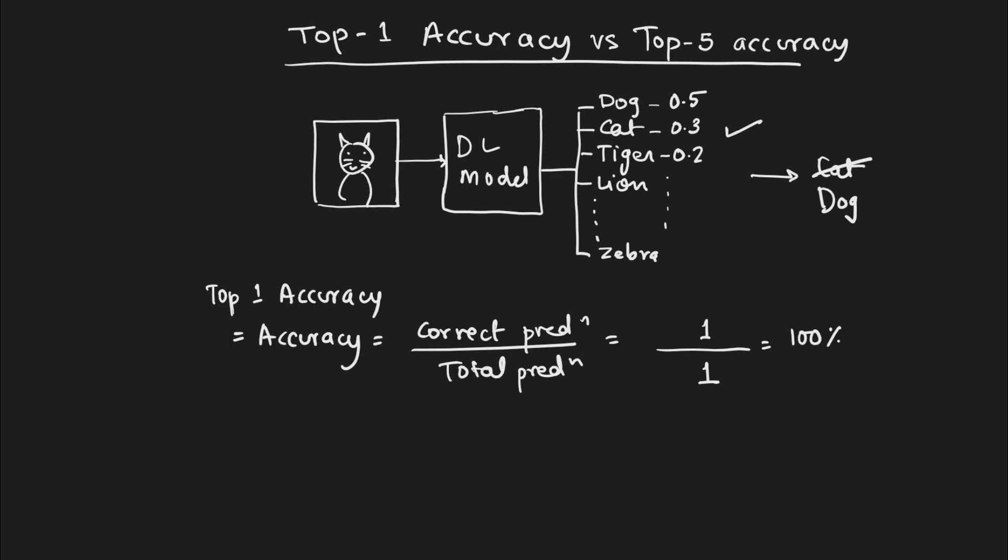So as we know that if we go by accuracy this is wrong, and that is why we have a new metric called top-5 accuracy. So in this case the top-5 accuracy says that if the top five predictions, top five probabilities, contain the correct label, the accuracy will be calculated as such.